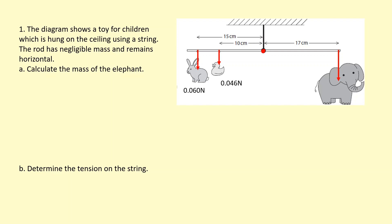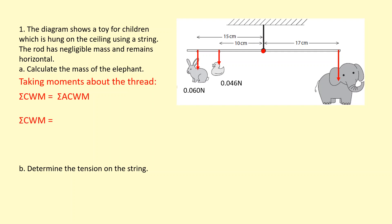I'm going to take moments about the thread. The reason is because there's a force through the thread, but if I take moments about that point I can ignore that force. Sum of clockwise moments equals sum of anticlockwise moments. The elephant creates the clockwise moment — we want its mass, but let's get the weight first: weight equals mass times gravitational field strength, times the distance of 0.17 meters.